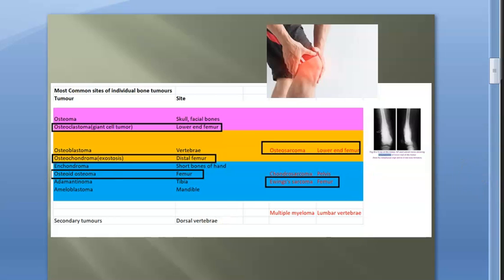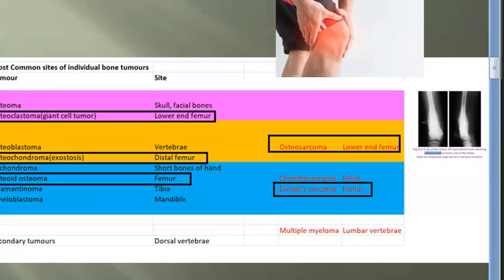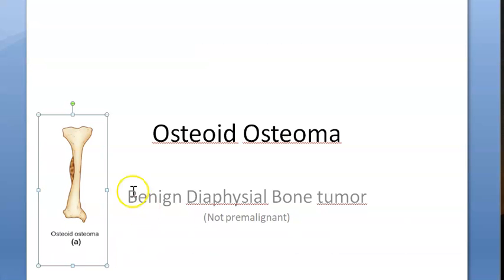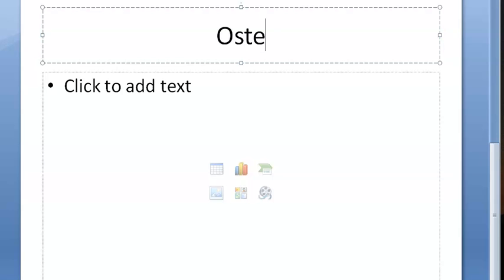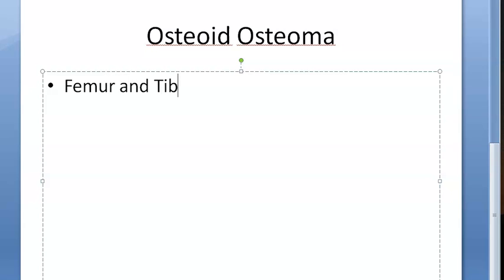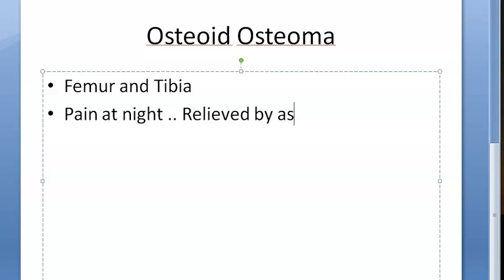Osteoid osteoma commonly affects the femur and tibia — the textbook states that the lower extremities are most common, with tibia being the commonest site. The most important clinical clue is pain at night relieved by aspirin or salicylates. This is a key distinguishing feature they will give you.